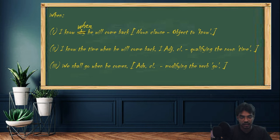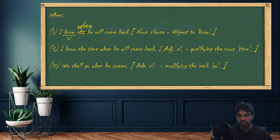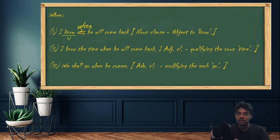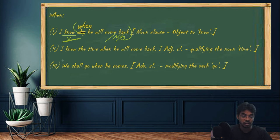Consider: 'I know when he will come back.' The trick is to catch the verb — here the verb is 'know'. Know what? I am asking the verb with the question 'what?' And the verb answers with 'when he will come back.' That means this is a noun clause — it's used as an object for the verb 'know'. So with 'when', we can get a noun clause.